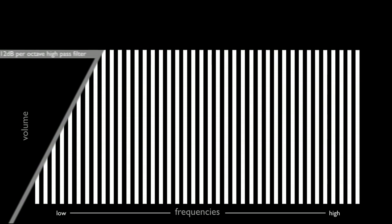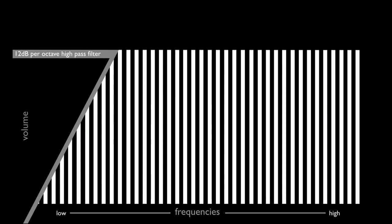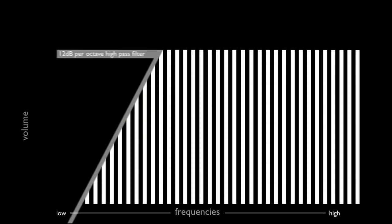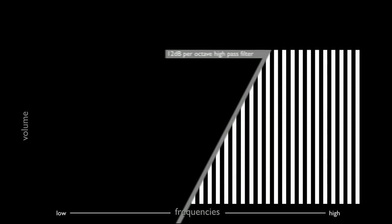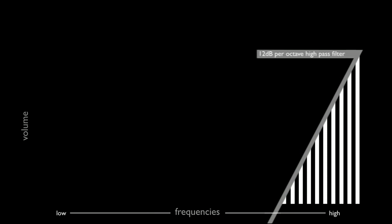The high-pass filter. This successively removes low frequencies from the sound. The harmonics below the cutoff point are progressively attenuated or removed.